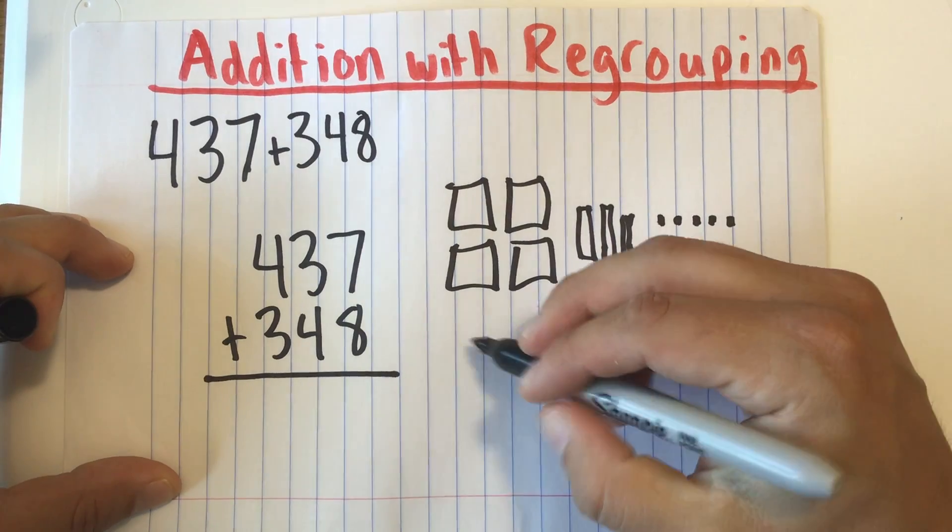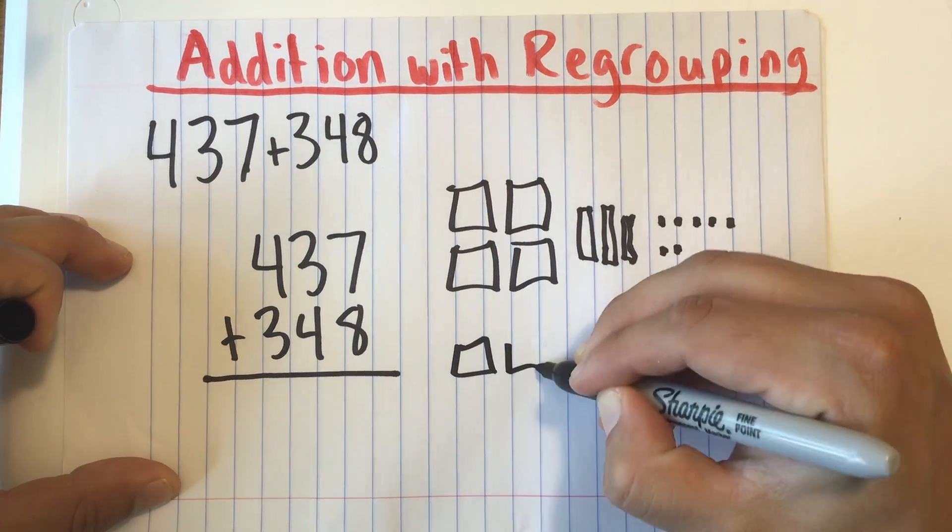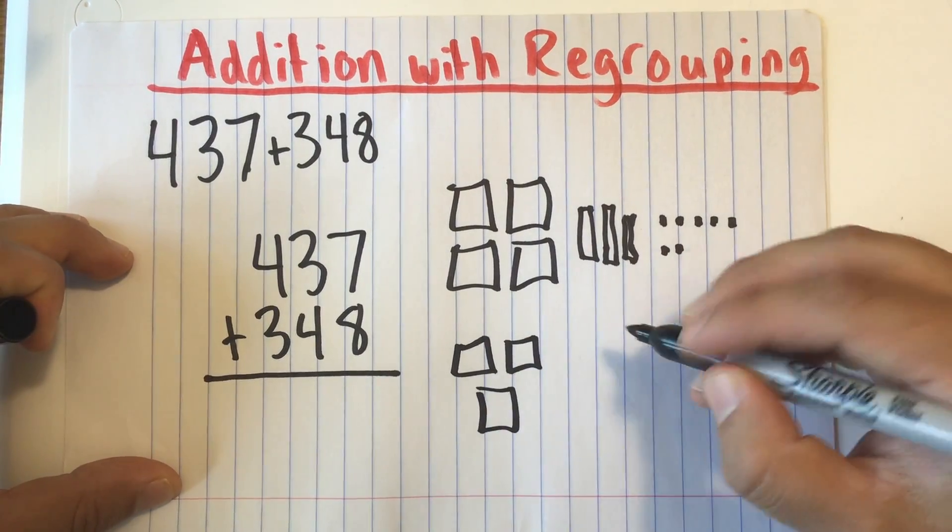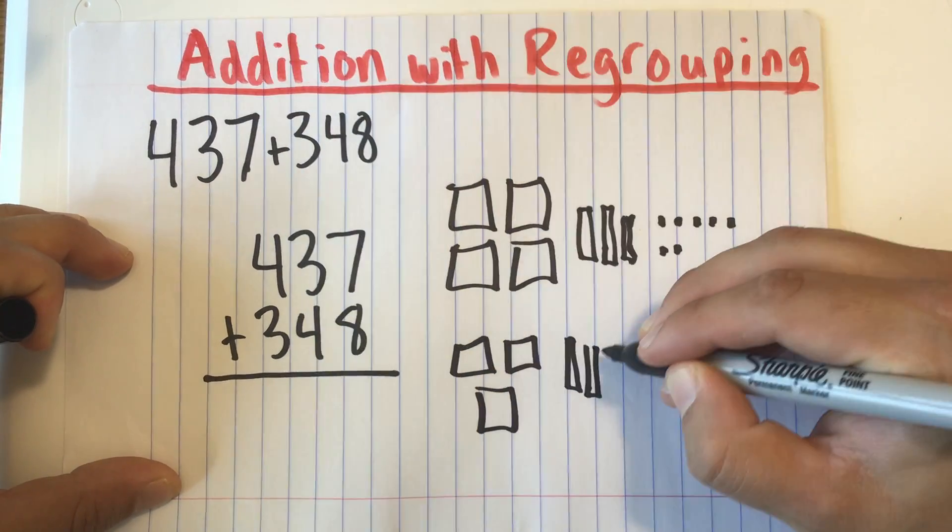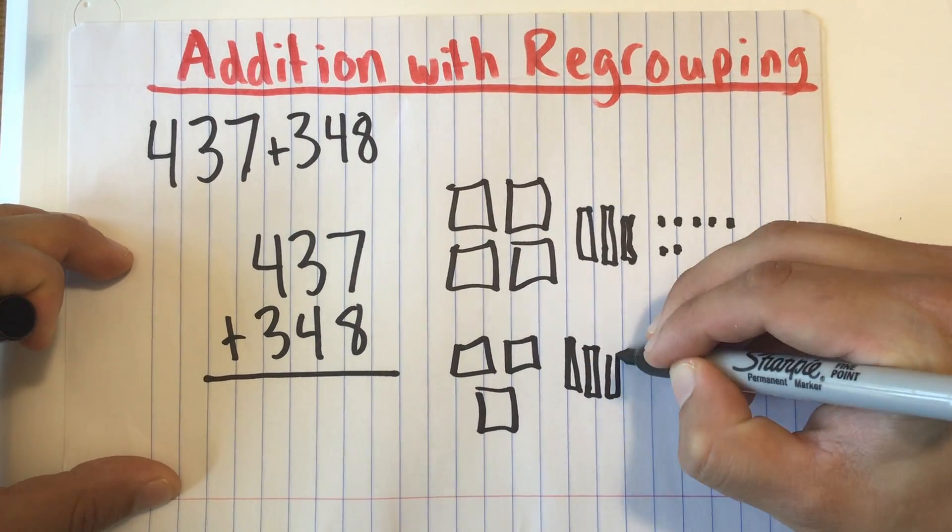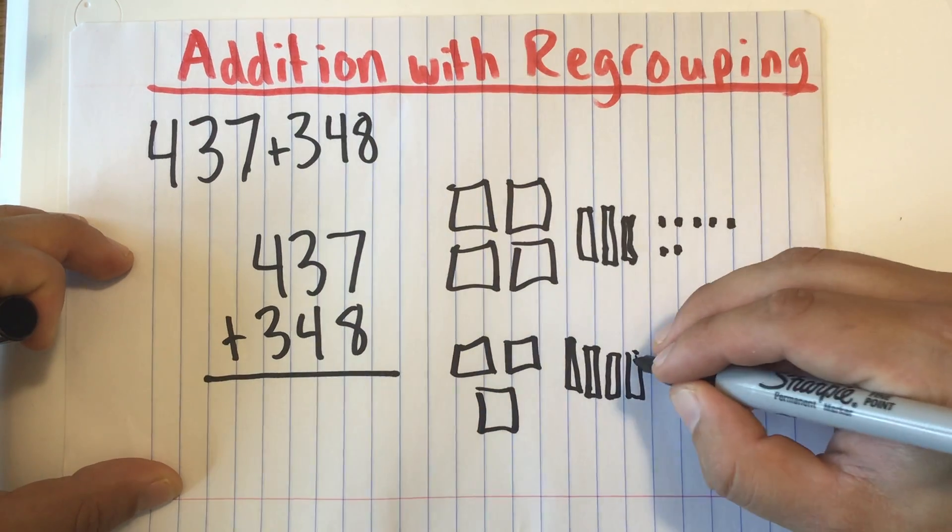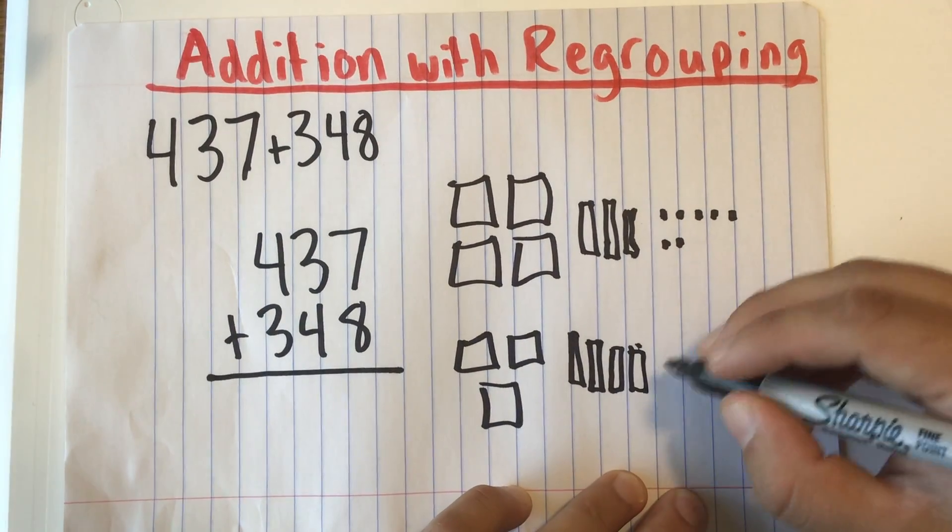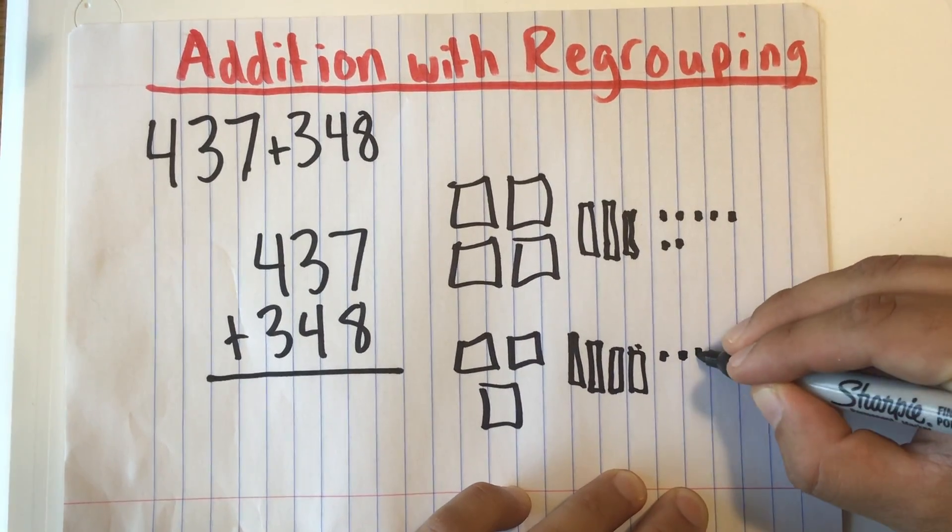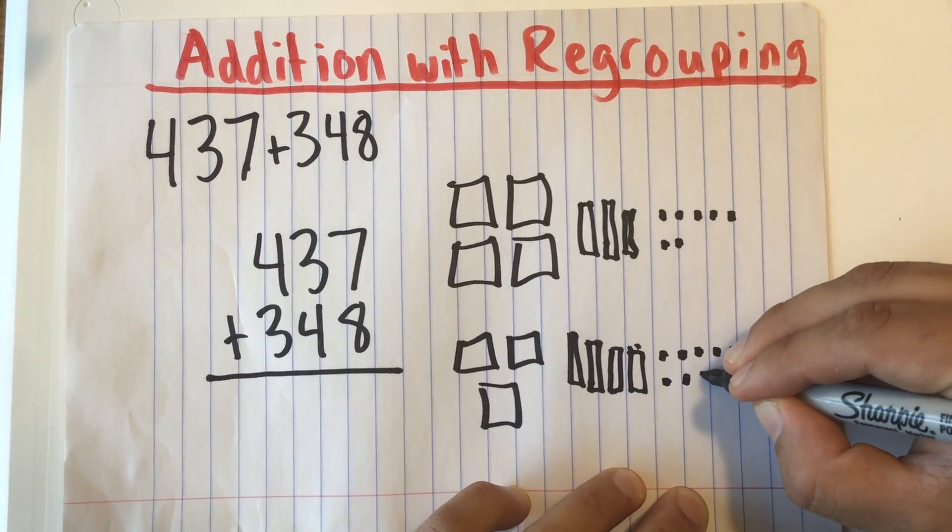Alright and I'm going to do the same thing with 348. So there's 3 hundreds, 4 tens this time, and 8 ones. 1, 2, 3, 4, 5, 6, 7, 8.